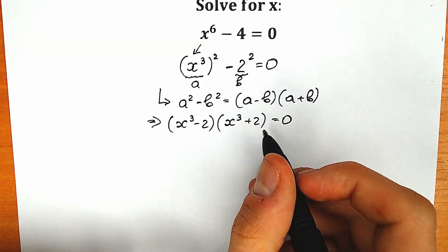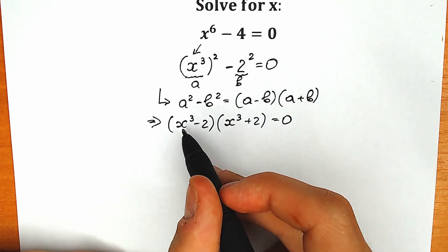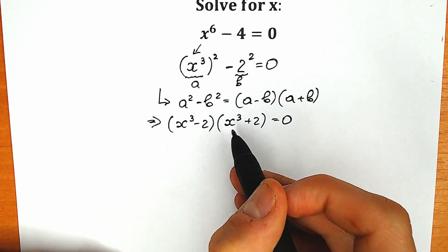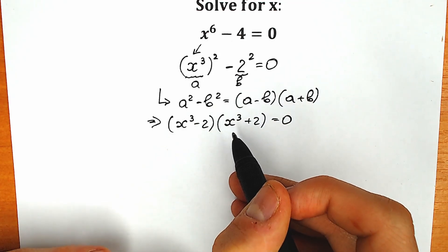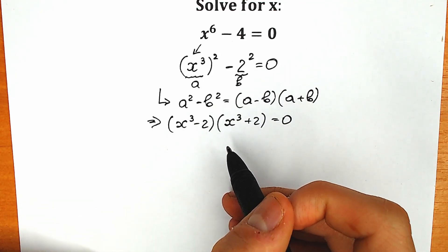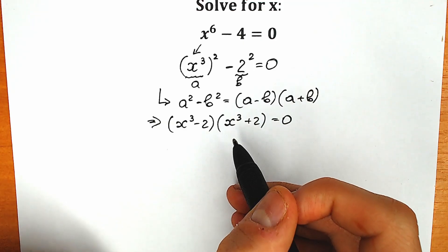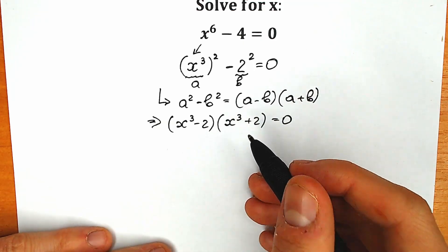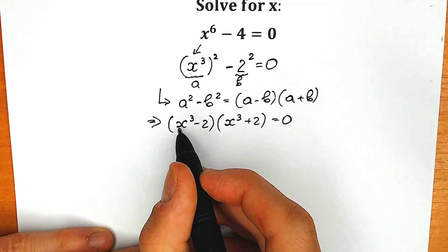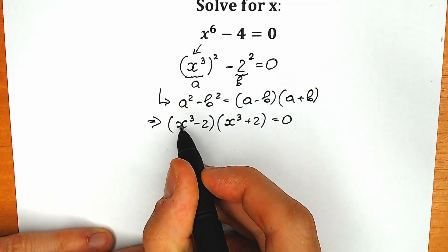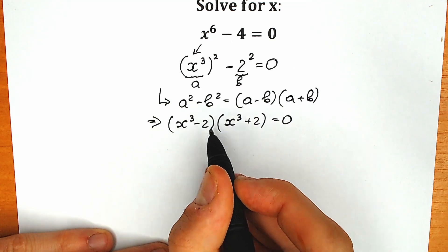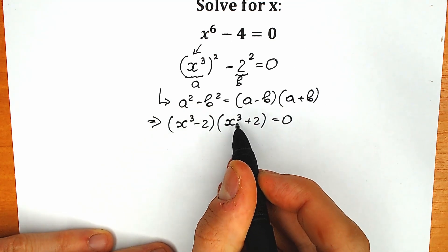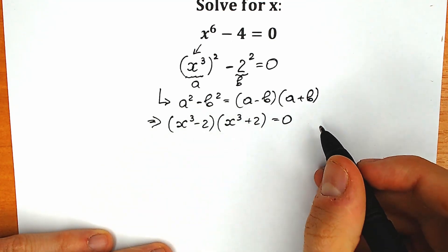What are we going to do next? Of course we can set each factor to 0, but we're going to miss some complex roots. So right now I'm going to solve this equation completely and step by step. We can express x cubed minus 2 as a difference of two cubes, and x cubed plus 2 as a sum of two cubes.